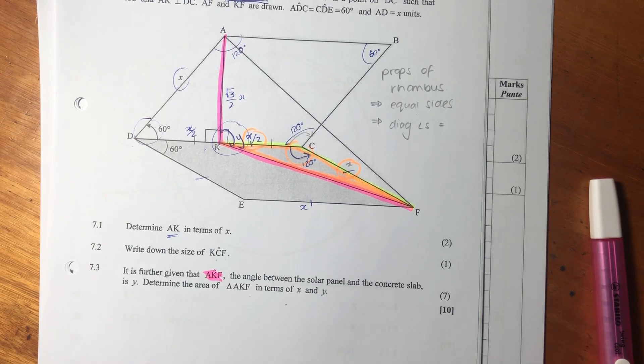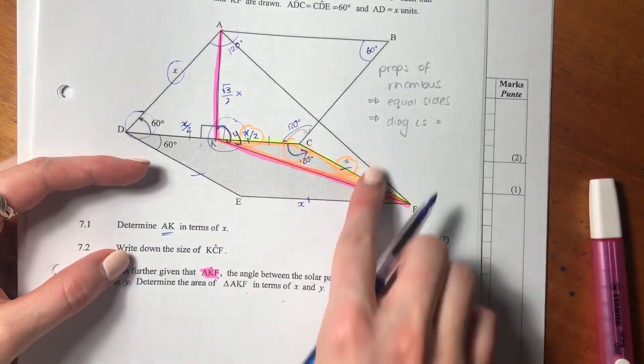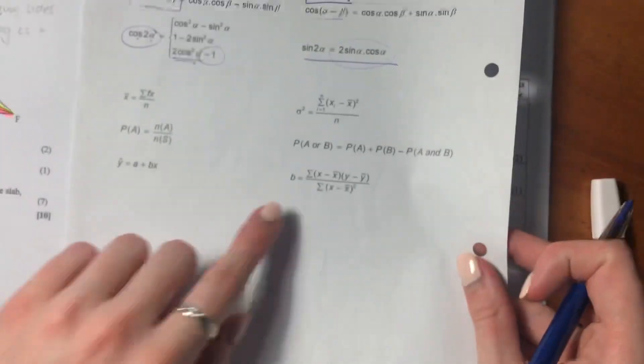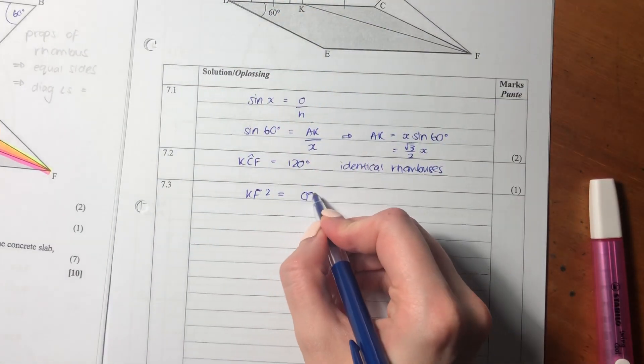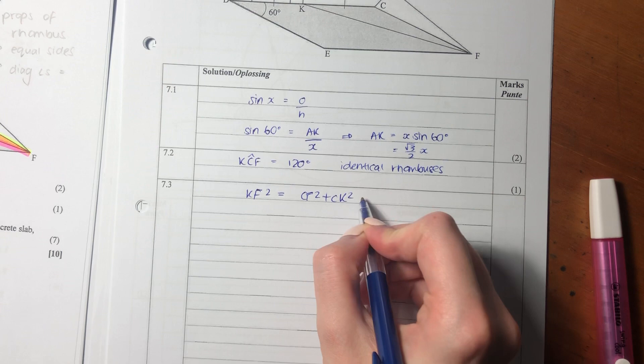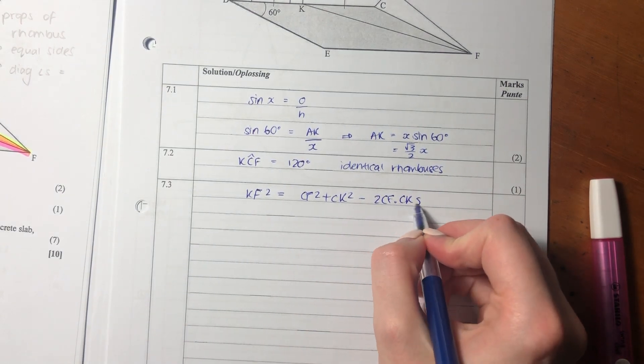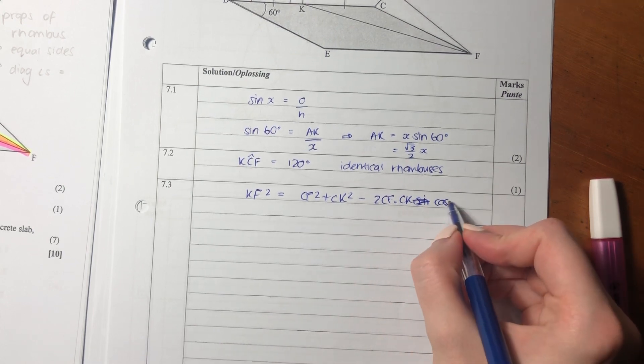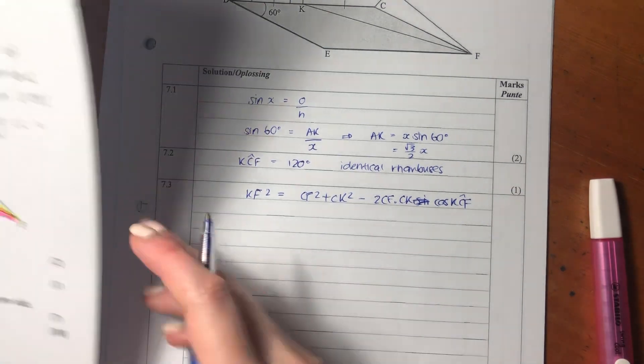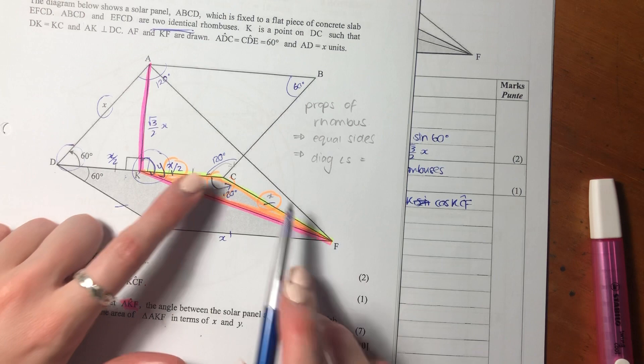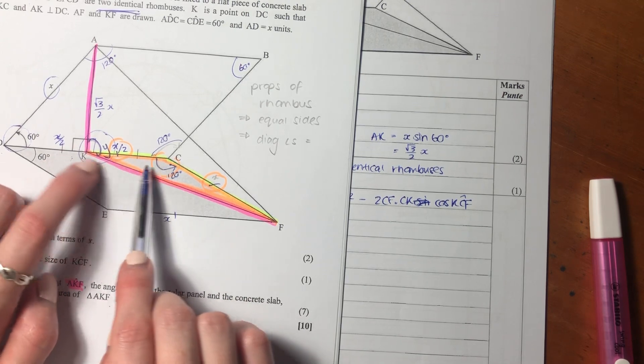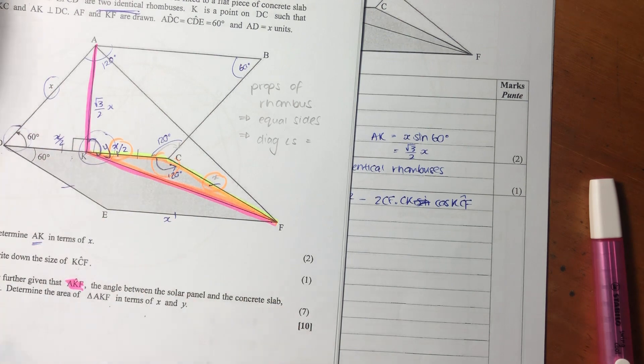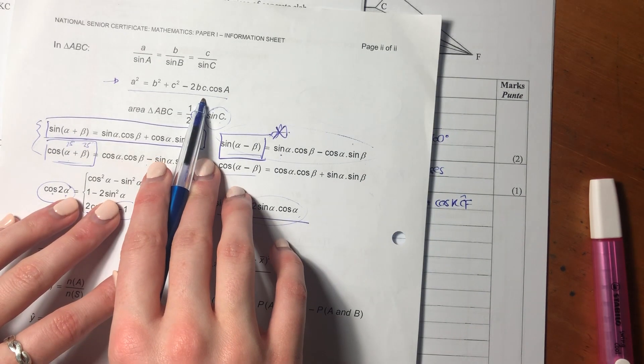7.1 and 7.2 are going to help us solve 7.3 - these questions build on each other. Let us write what we know in this triangle into the form of this formula. We have KF squared is going to be CF squared plus CK squared minus 2CF times CK cos KCF. We've just substituted into this formula.